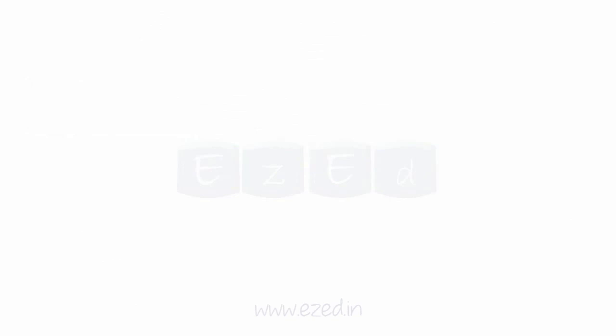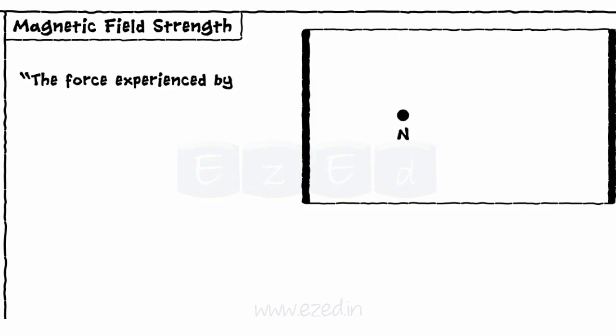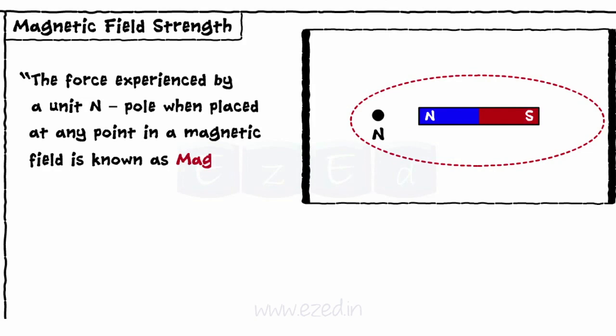The third term is magnetic field strength. The force experienced by a unit north pole when placed at any point in a magnetic field is known as magnetic field strength at that point. It is denoted by H, and its unit is N per Weber, or Ampere per Weber.